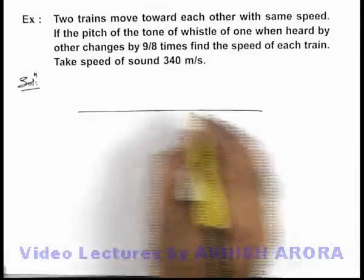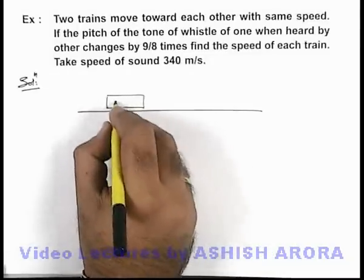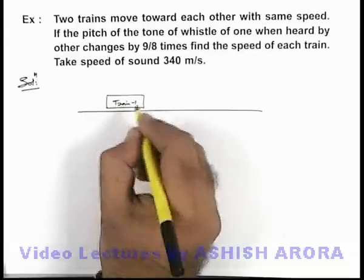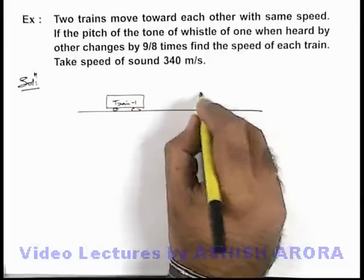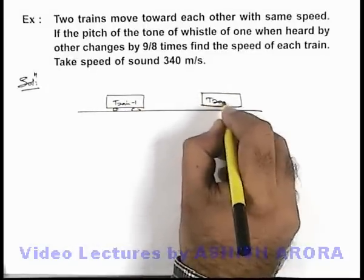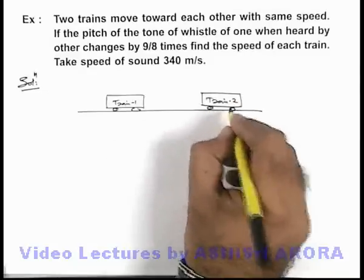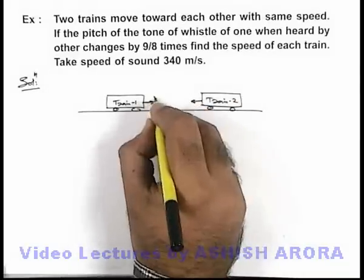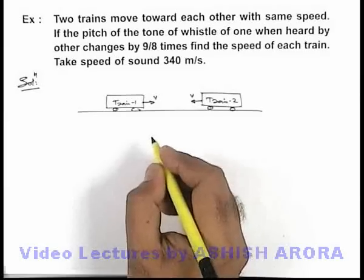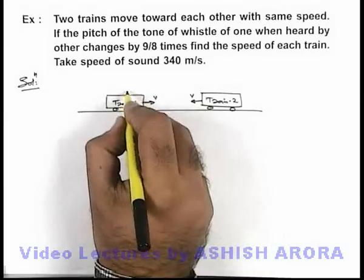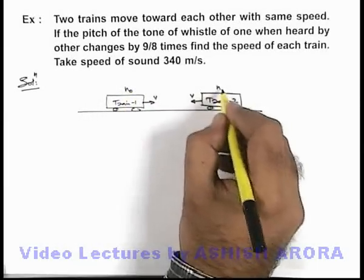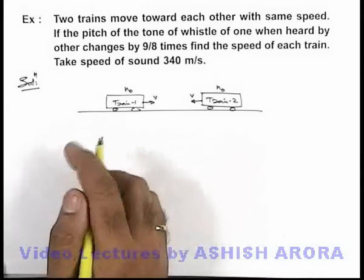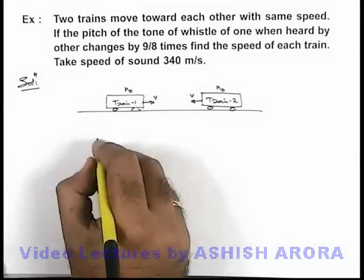If we just draw the situation, we have 2 trains — say this is Train 1 and this is Train 2 — and these 2 are approaching each other with the same speed v. Both of these are producing sound of frequency n₀.